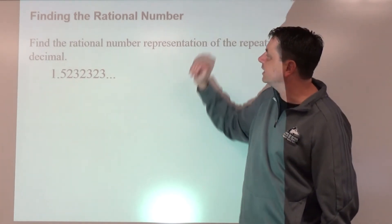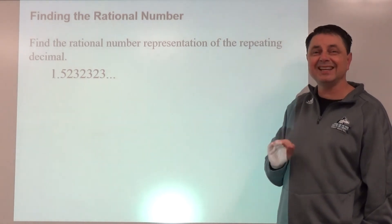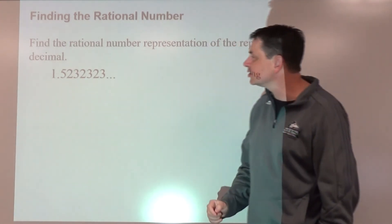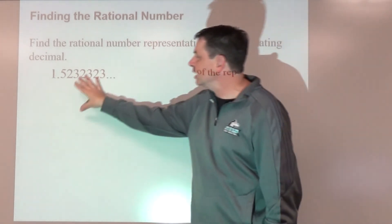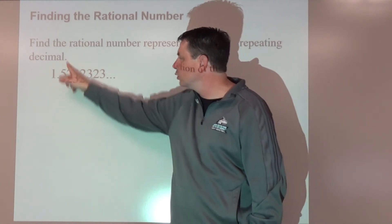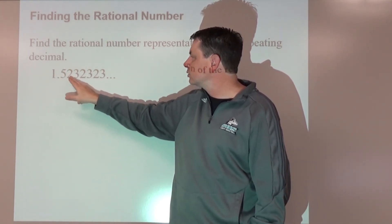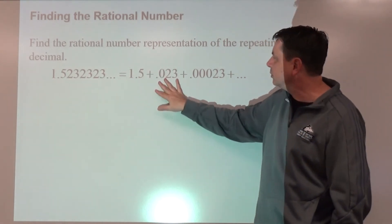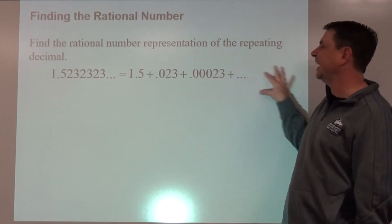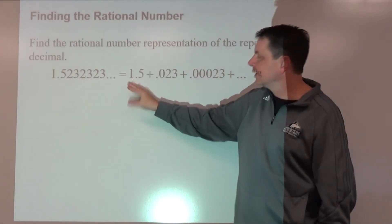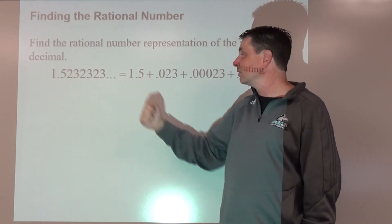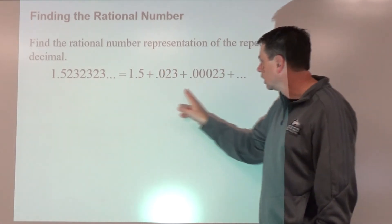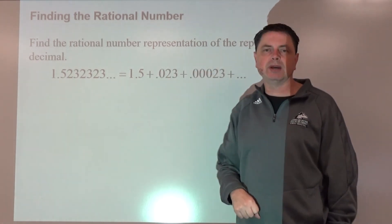We'll wrap up by finding the rational number equivalent of a repeating decimal. The decimal has a repeating part and a non-repeating part. We separate them: 1.5 is the non-repeating part, and 0.0232323... is the repeating part. So we get 1.5 — which is 3/2 — plus the repeating decimal as an infinite geometric series.